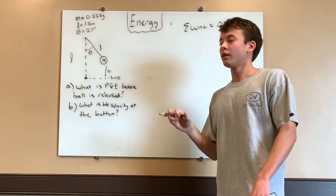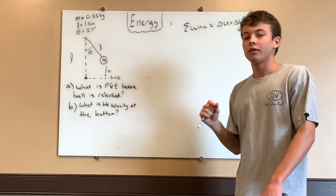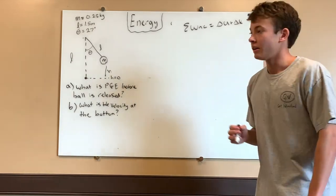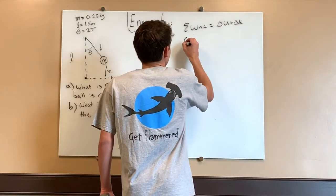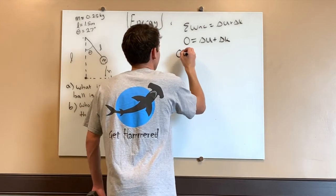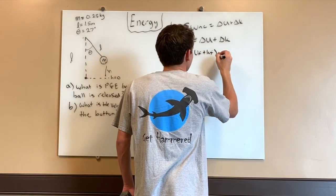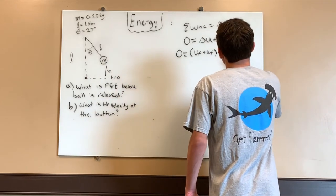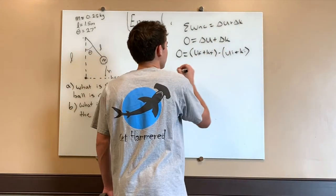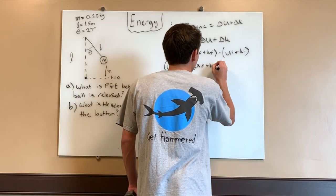Because we're only dealing with gravity, the non-conservative work is going to be zero — we have no forces contributing non-conservatively, such as friction, which loses energy to heat. So we have zero equals delta U plus delta K. Expanding into final and initial states, we get U_f plus K_f minus U_i minus K_i equals zero, which rearranges to: U initial plus K initial equals U final plus K final.